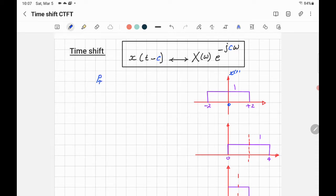We know that for the rectangular pulse of width τ centered on the y-axis, the Fourier transform of the signal will be equal to τ sinc(ωτ/2π). In this example, τ is equal to 4.